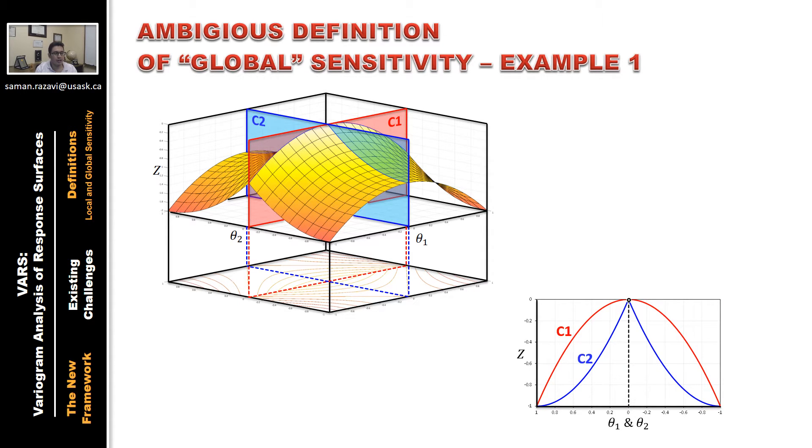The question now is, how is the sensitivity of z to theta 1 and theta 2? Both the derivative-based and variance-based approaches tell us that the response is equally sensitive to both of the parameters. But are these two cross sections any similar? Probably not much. But the two approaches cannot differentiate them.